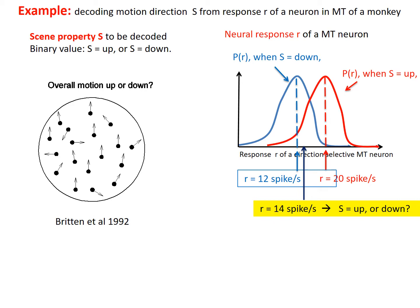Let's recall our previous story of trying to decode motion direction for neural responses. When our example neural response was 14 spikes per second, we guessed that the motion direction is downwards since 14 spikes per second is closer to 12 than to 20 spikes per second.